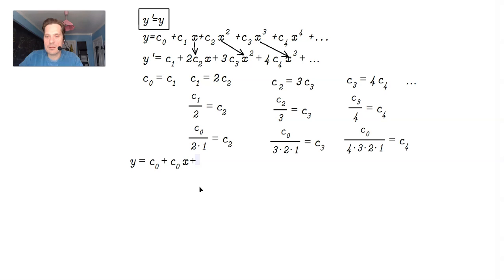Go on. So c sub 2 is c sub 0 over 2 times 1 and this is x to the second plus c sub 0 over 3 times 2 times 1 and this would be the one that corresponds to x cubed plus c sub 0 divided by 4 times 3 times 2 times 1. This is the one that corresponds to x to the fourth plus dot dot dot.